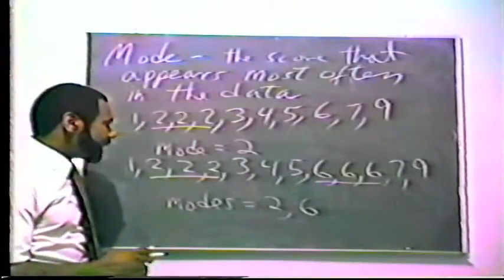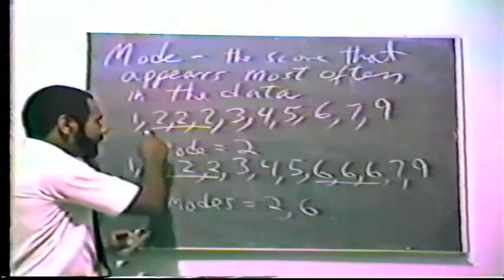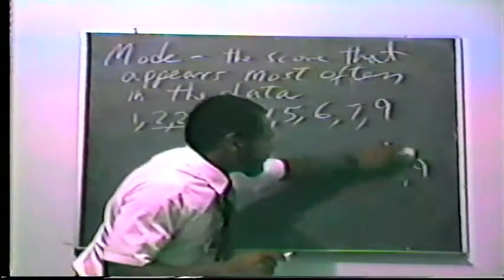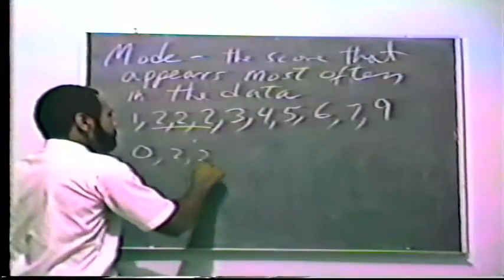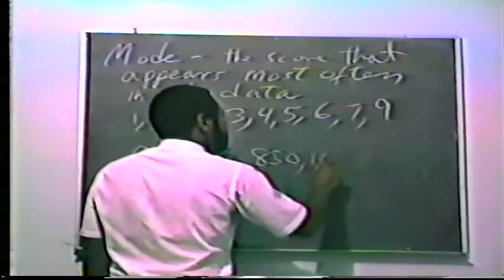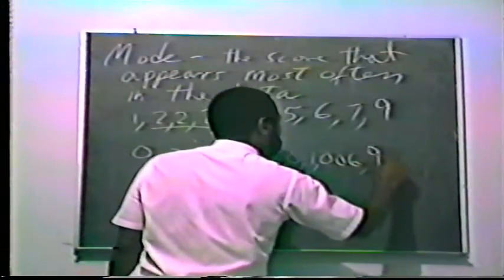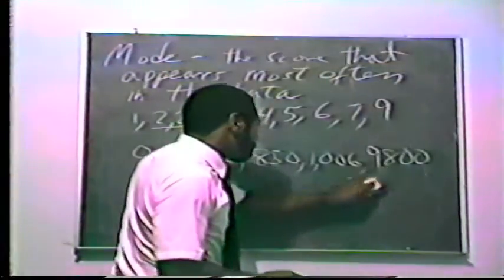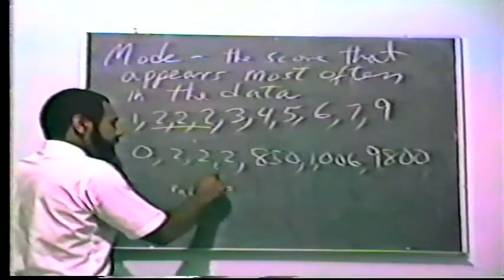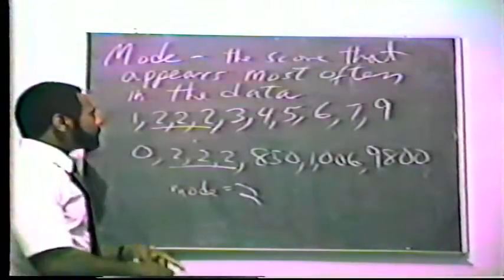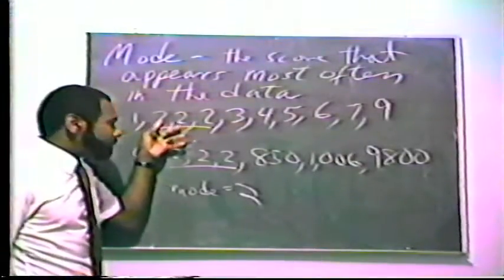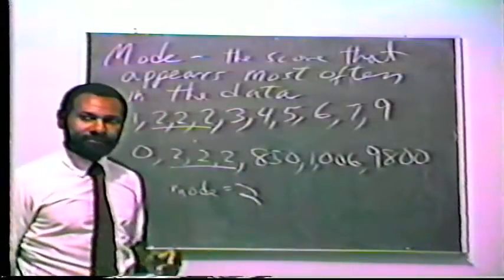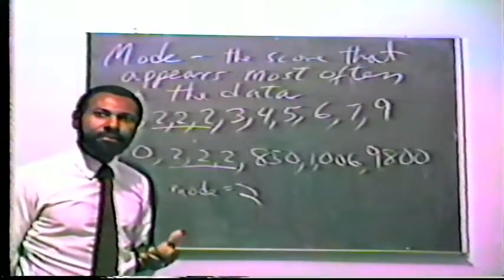For example, I could have another data set similar to this one. I could have a data set with the numbers 0, 2, 2, 2, 800, 50, 1000, 6, 900, 9000, 800. The mode of this new data set would be 2, and the mode of the original data set was also 2. But are these data sets really similar? I would think not — but they have the same modes. So you can see how misleading the mode could be.